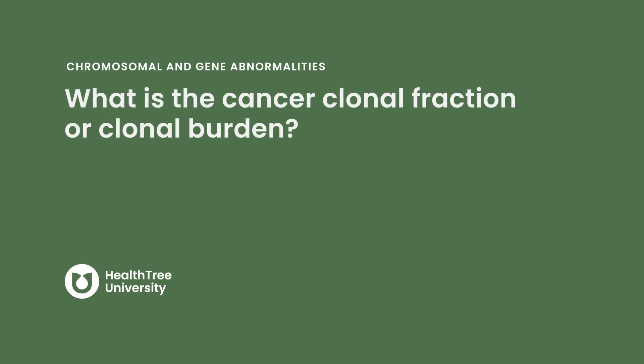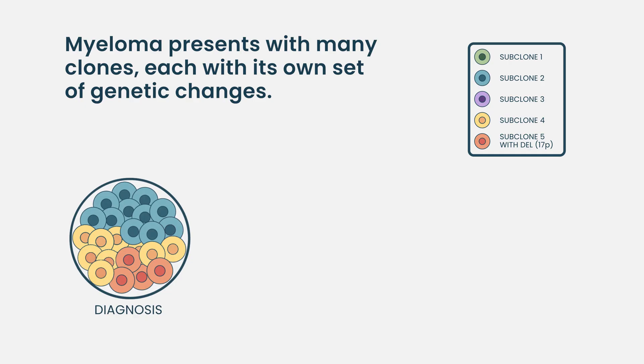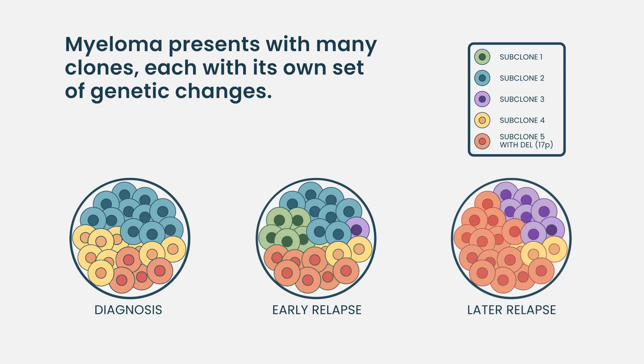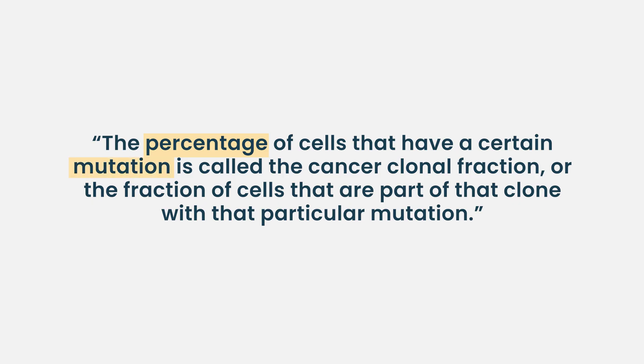What is the cancer clonal fraction or clonal burden? Myeloma is a very heterogeneous disease with many different clones, and as the disease advances, more clones typically develop. Some cells may have certain genetic changes while others do not. The percentage of cells that have a certain mutation is called the cancer clonal fraction. For 17P deletion, high risk is defined as more than 20% of the bone marrow tumor cells or plasma cells having the mutation, as determined by fluorescence in situ hybridization (FISH).